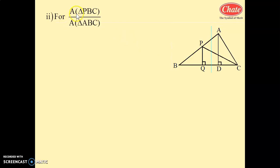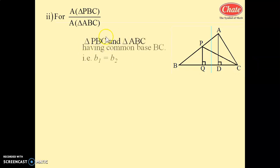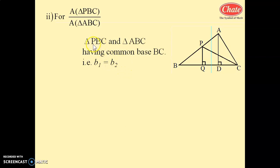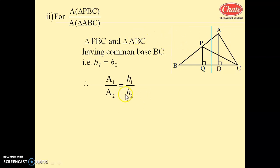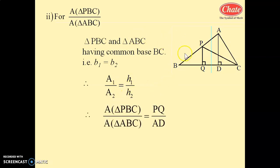Second: area of triangle PBC upon area of triangle ABC. Here the base BC is the same for both triangles. The height of triangle PBC is PQ and the height of triangle ABC is AD. So the ratio equals the corresponding heights, which is PQ upon AD.